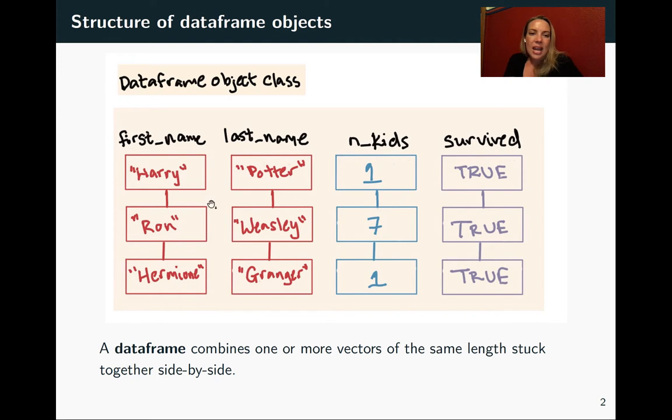We've got that name, we could do a last name, we've got the number of kids and whether they survived to a certain point in the book. When you have several vectors that are all the same length, where a certain position in one corresponds to a certain position in another—just like the first position in each corresponds to Harry and the second to Ron—then you can store them together in an object class called a data frame.